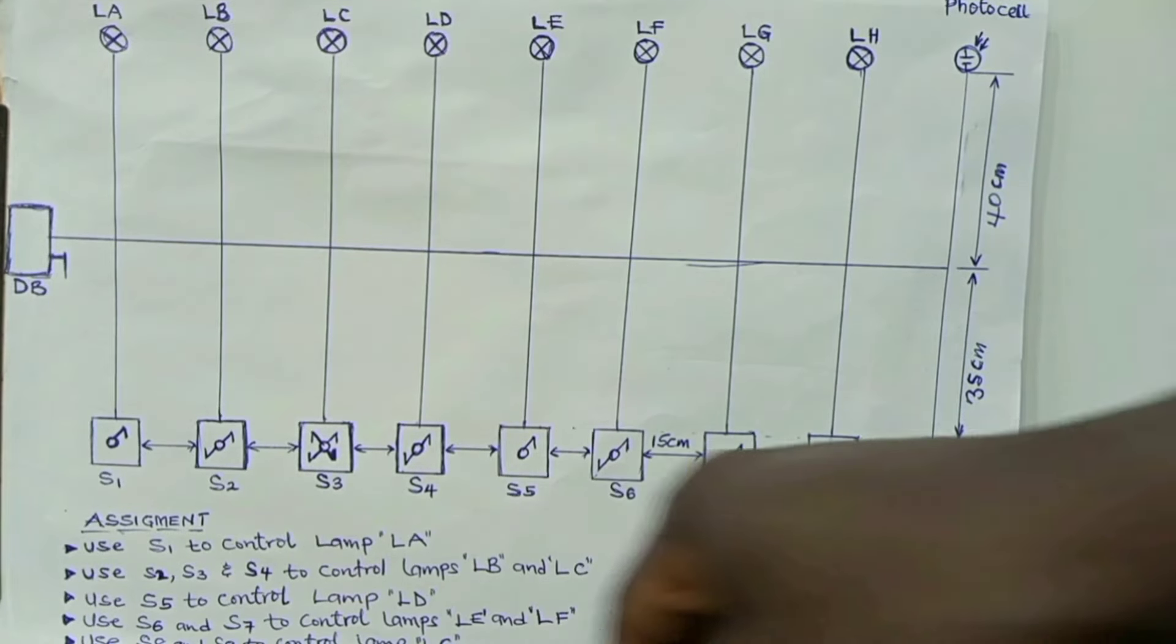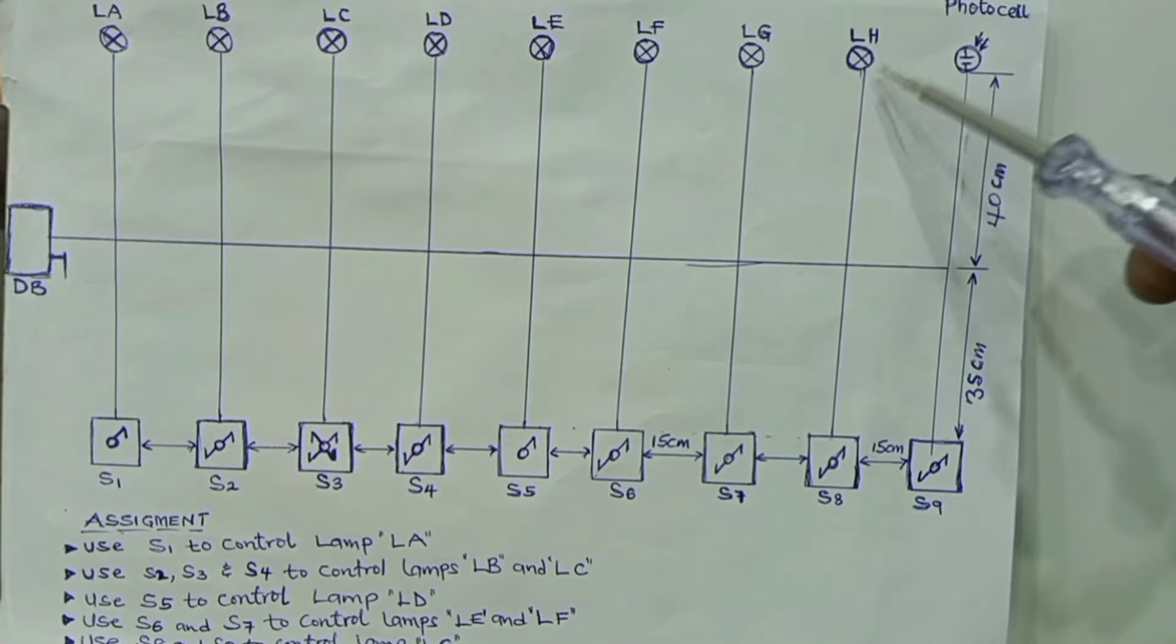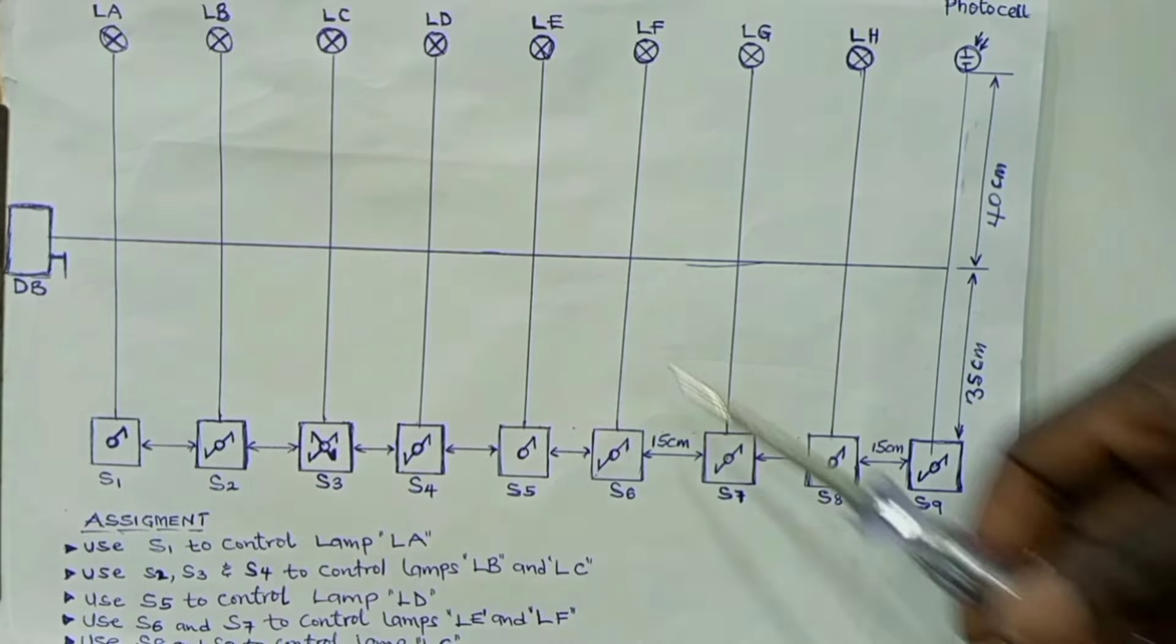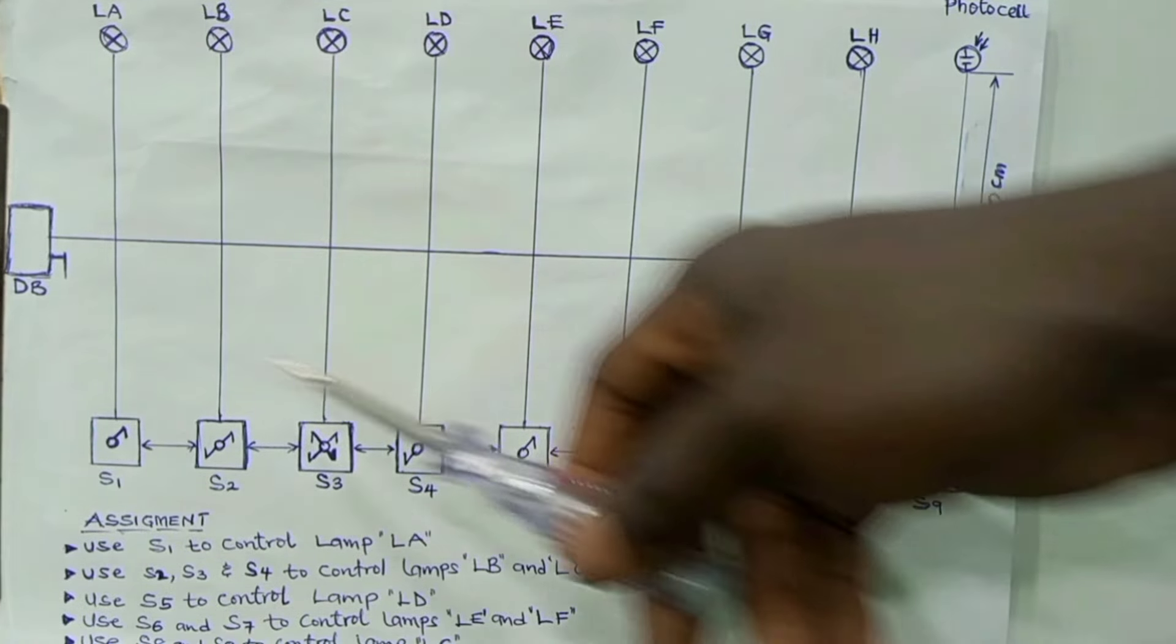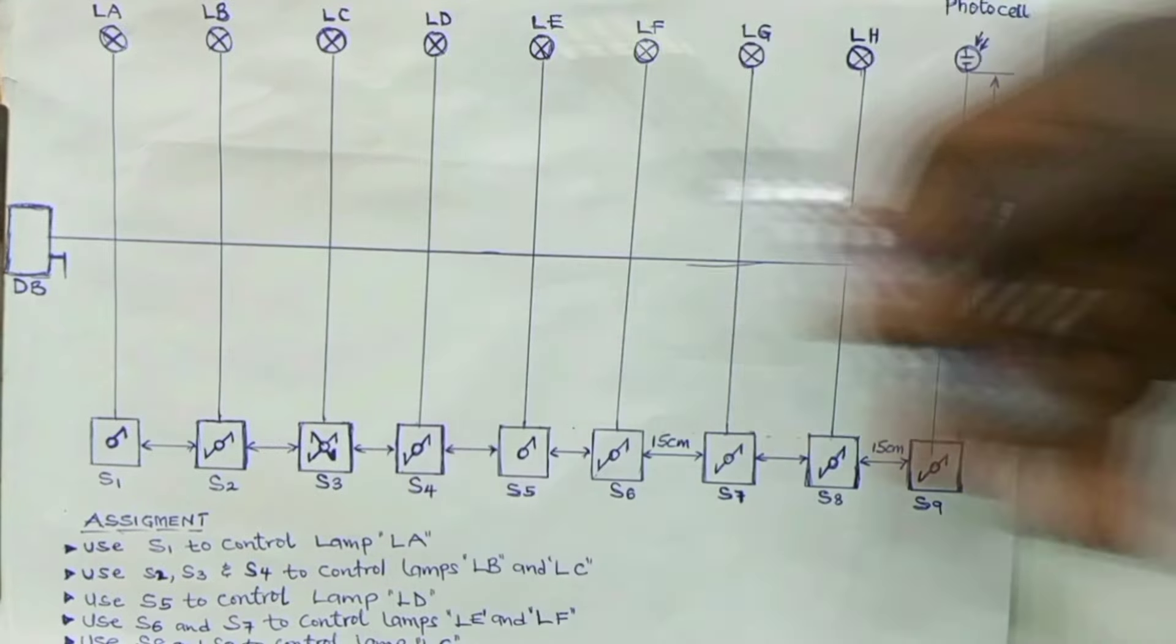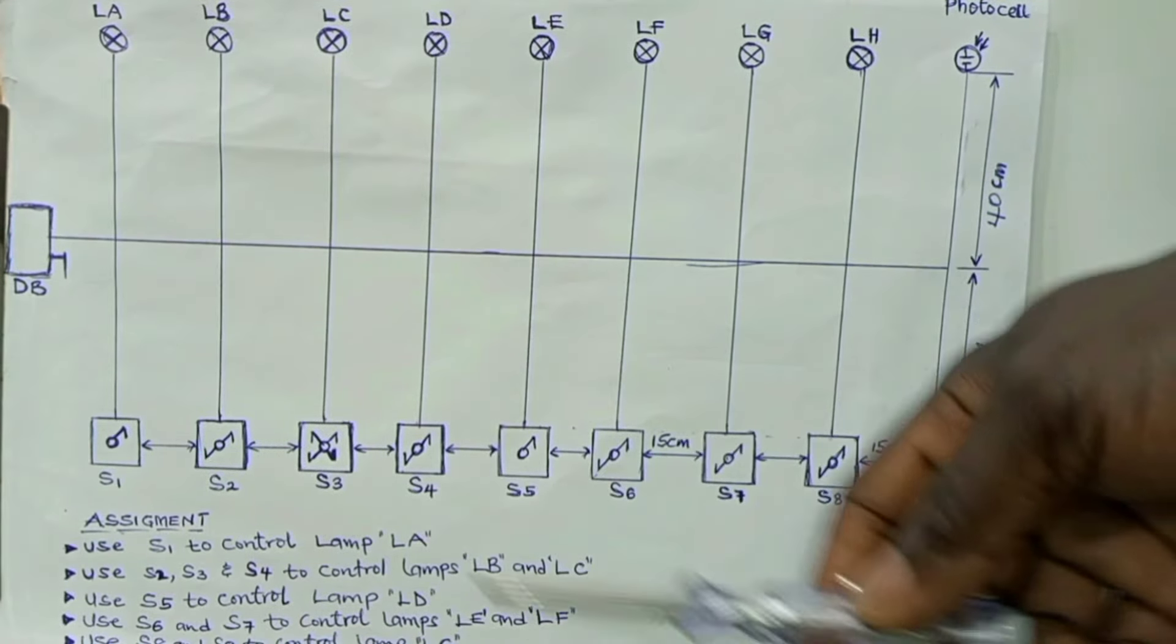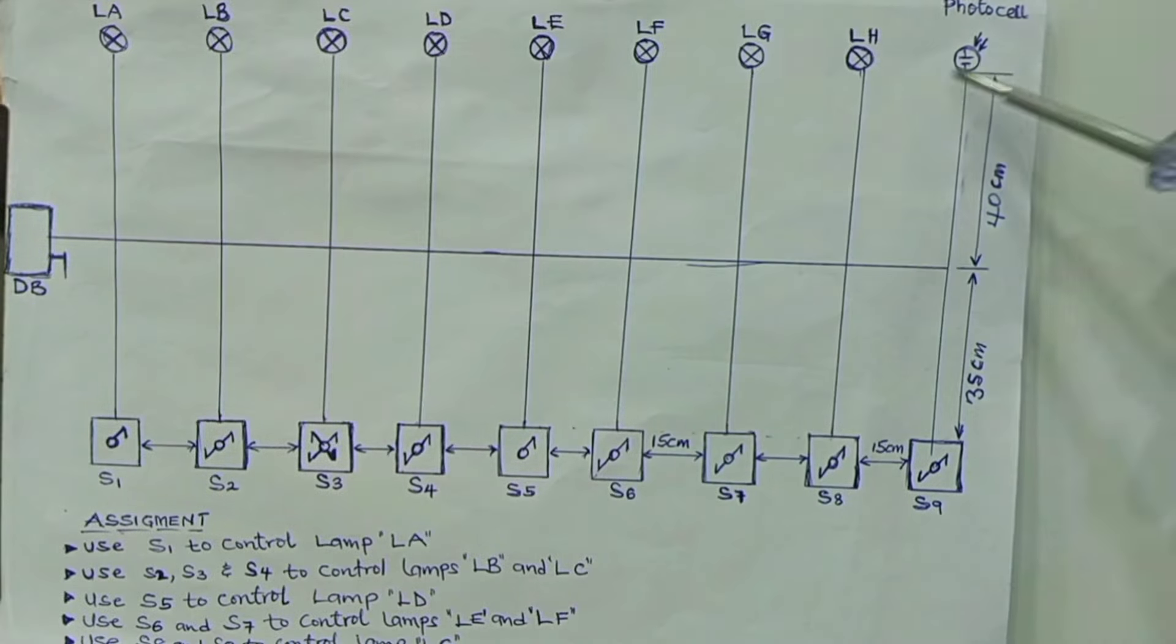And then you use the photo cell to control lamp H. So as I said, you may be asked to use any of these switches or one of these switches with the photo cell. But in this particular example...